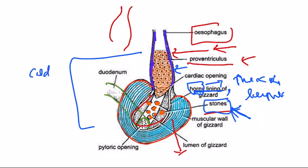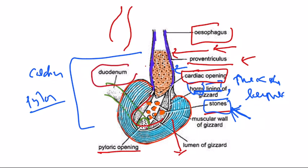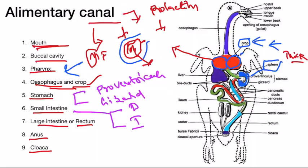Though we don't call these cardiac stomach and pyloric stomach, the sphincters are still called cardiac sphincter and pyloric sphincter. The proventriculus opens into the gizzard by the cardiac sphincter, and the gizzard opens into the duodenum by the pyloric sphincter.